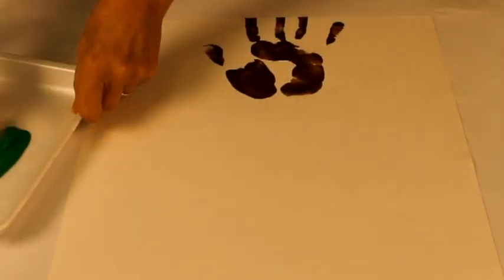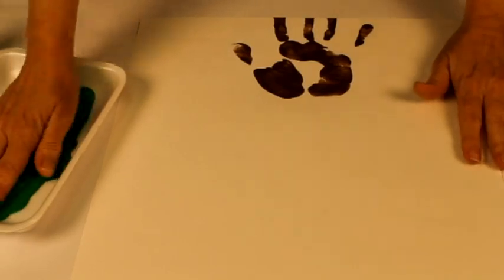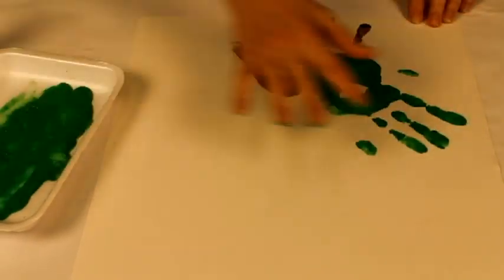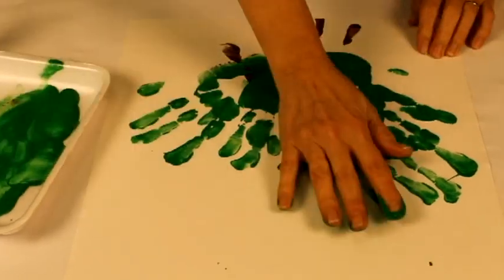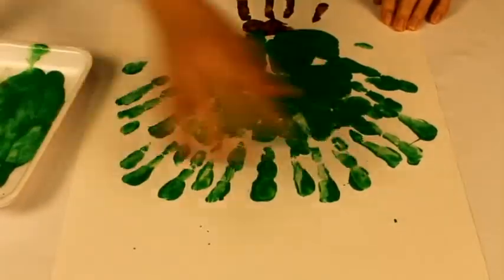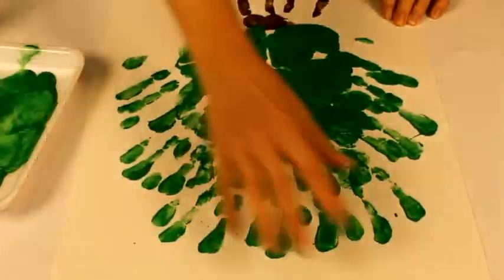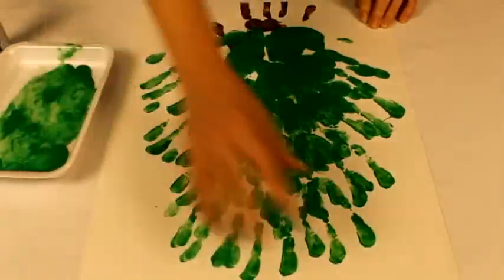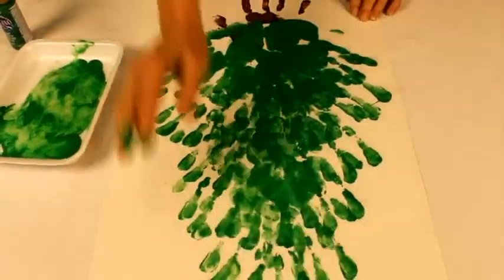Wash the styrofoam tray and take another one to put green paint in it. To represent the branches of the tree, dip your hand in the green paint and make handprints to form the tree. Work in a fan movement upwards and always have your fingers spread open pointing outward.